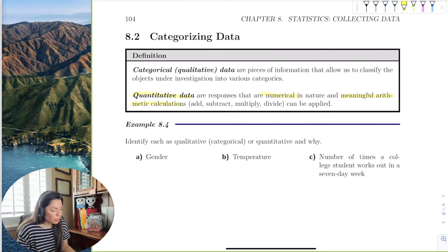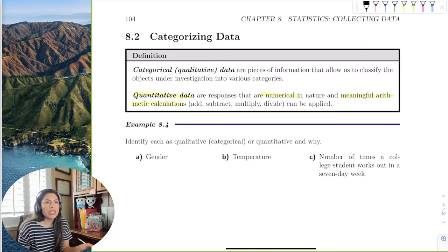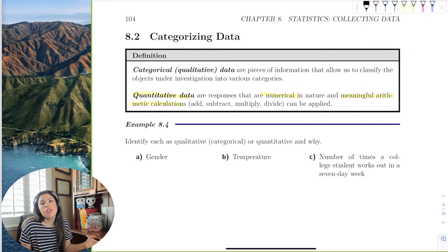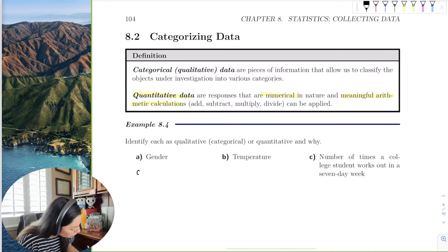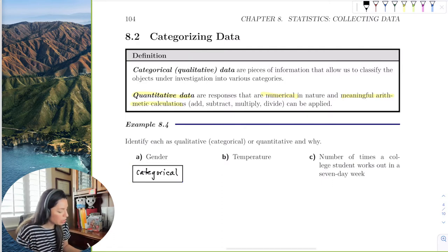So for example, gender. So gender, can you add a bunch of genders up and divide and find an average gender? No. So this is automatically a category. So this is categorical data. If the answer isn't a number, then it's usually categorical.